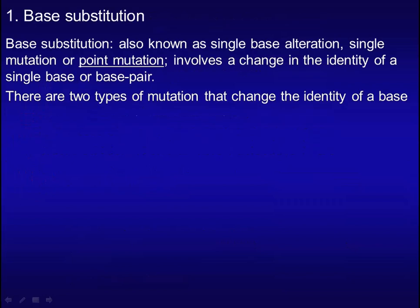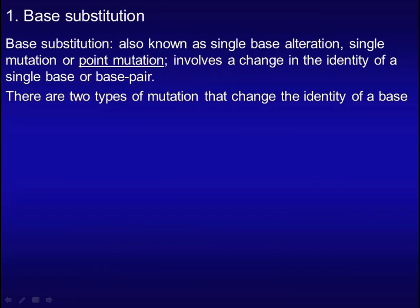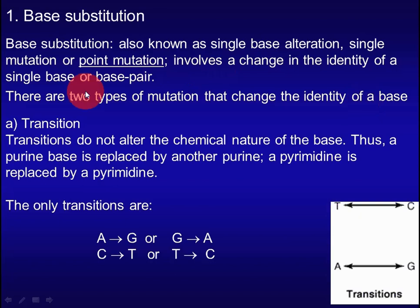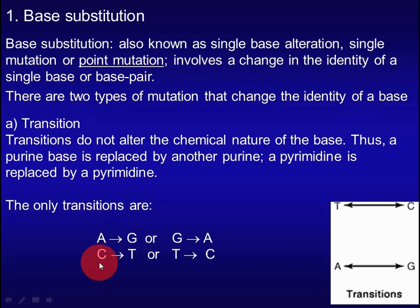Base substitution, also known as point mutation, involves a change in the identity of a single base. There are two types of point mutation. One is transition, in which a purine base is replaced by another purine base, or a pyrimidine is replaced by another pyrimidine.